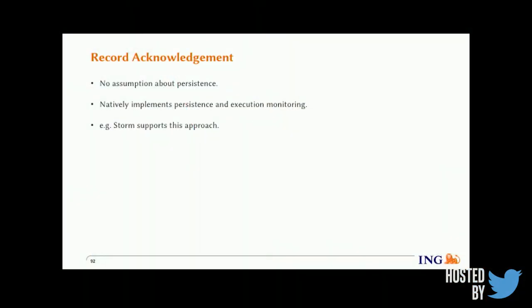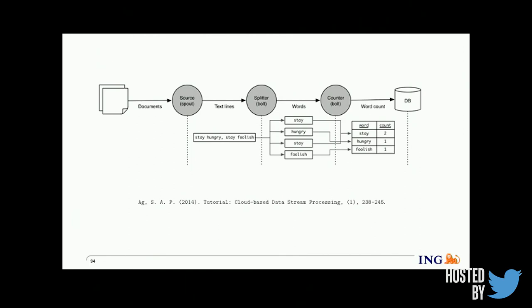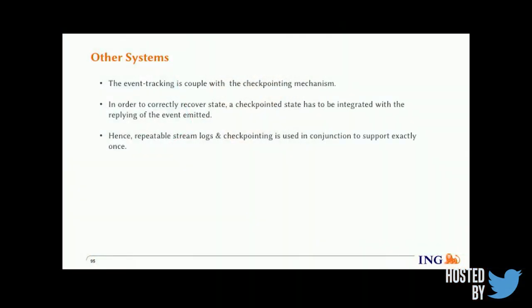Storm uses record acknowledgement to ensure a form of fault tolerance via the notion of trackers, which keep a tree of events happening in the system. At any point, if an event is detected as not delivered, it replays that event — that's how it ensures at-least-once guarantees. Other systems like Flink and Samza have checkpointing capability: you restore a checkpoint and start replaying events from it to return to the state before the failure.